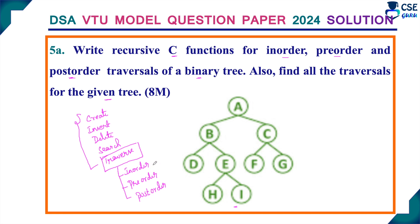In in-order traversal, the left-side node should be visited first, then the root node, then the right-side node. This applies to both binary tree and binary search tree. In pre-order traversal, as the name implies, the root node should be visited first, then the left-side node and then the right-side node. For example, if the tree is A, B, C — root is A — so A is visited first, then left node B, then right node C.